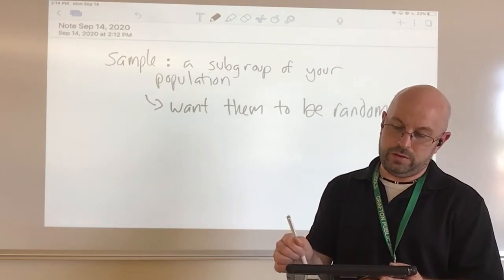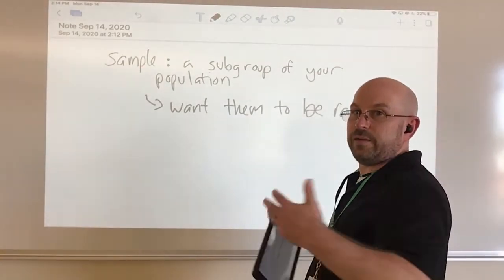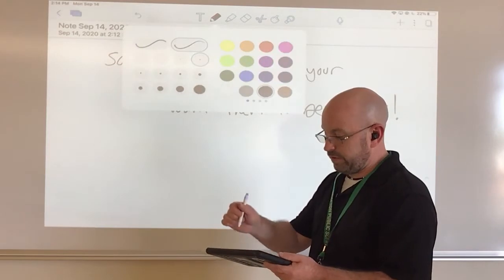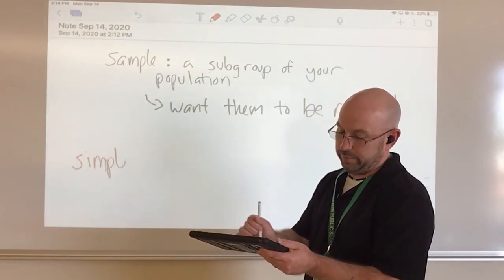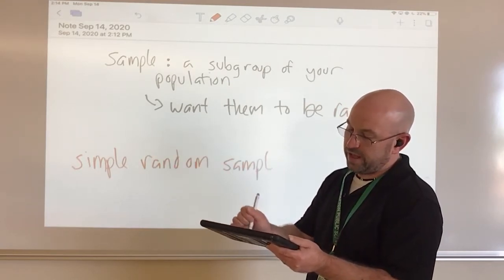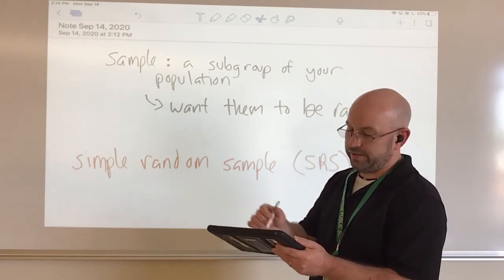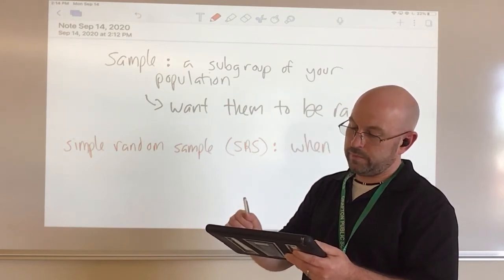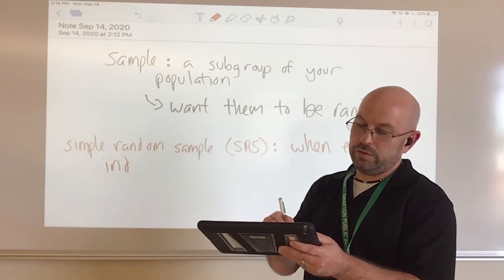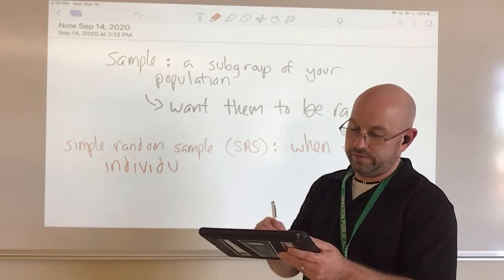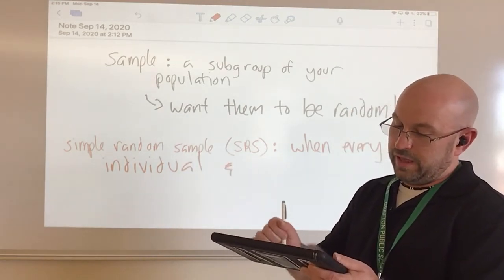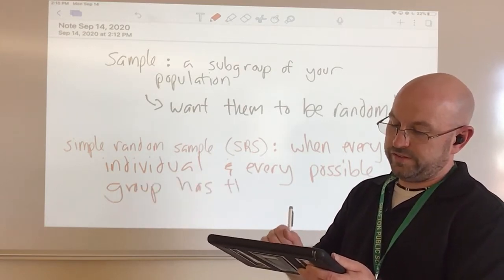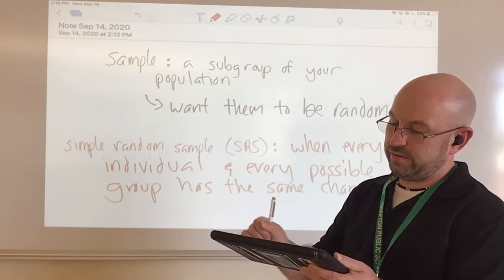Some samples are better than others, and some apply to different situations. The first type we'll talk about is called a Simple Random Sample — in this class we'll call it an SRS. A Simple Random Sample is when every individual, and here's the key part a lot of people forget, every individual AND every possible group has the same chance of being selected.